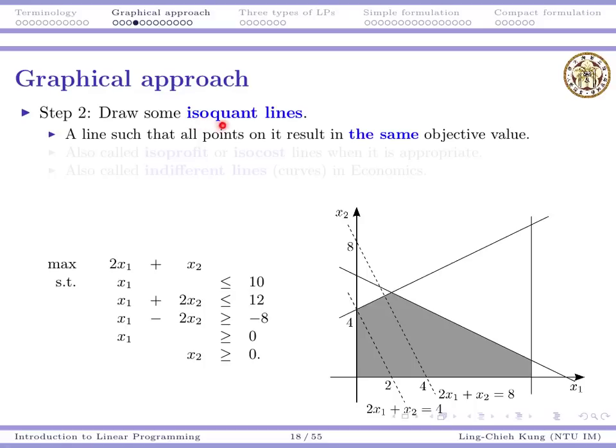Then you want to draw some isoquant lines. Here, quant means quantity and iso means objective values. So this is a line such that all the points on it give you the same objective value. For example, this line here, all the points there give you the same objective value 8. For example, (4,0) gives you 8 and (0,8) also gives you 8.